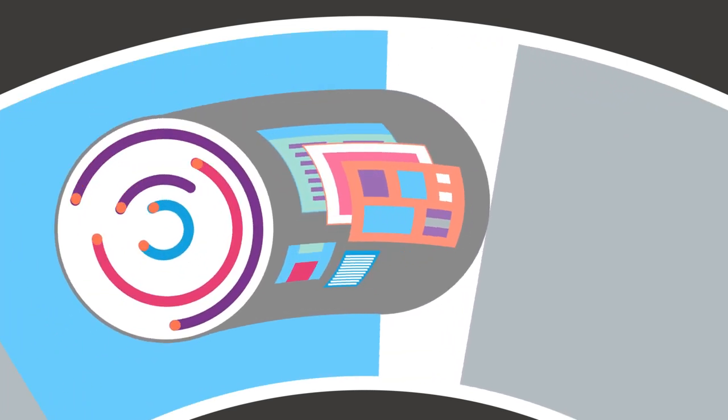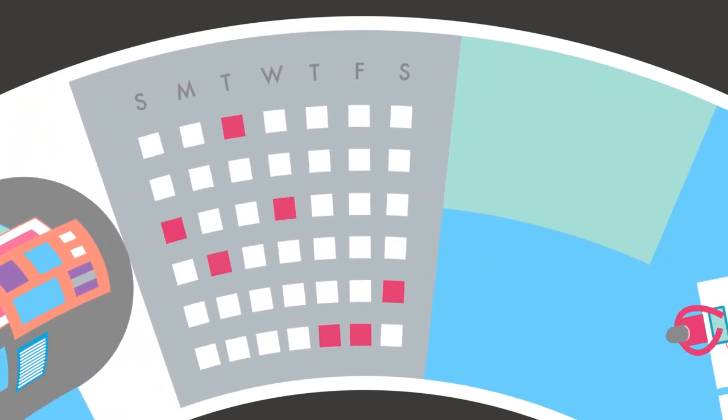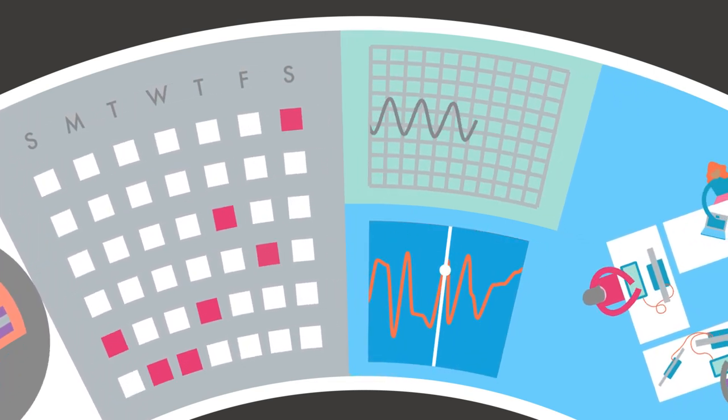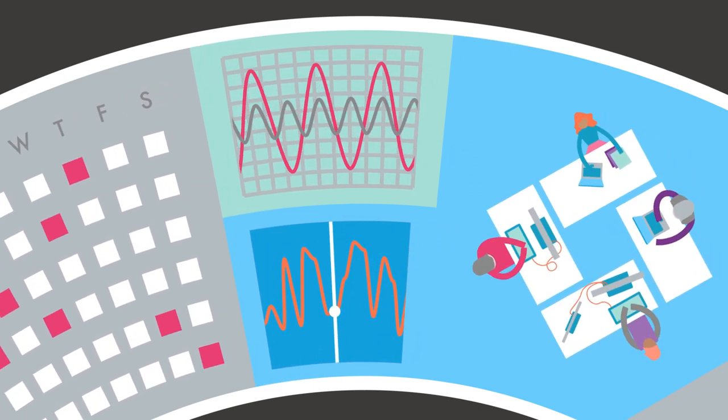Then they publish it using a content calendar to manage what content goes where and when. And they continually measure, evaluate, optimize and amplify with the aim of creating the maximum possible influence.